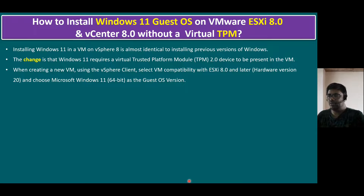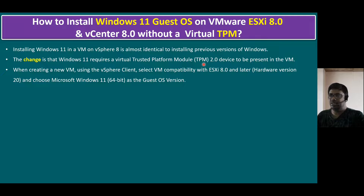When creating a new virtual machine using the vSphere client — connecting to vCenter server — select virtual machine compatibility with ESXi 8.0 or later, and hardware version 20. Choose Windows 11 64-bit as the Guest OS. The key difference is that Windows 11, as per Microsoft, requires a virtual TPM trusted platform module, which enhances security within the virtual machine Guest OS and reduces risk in the guest operating system.